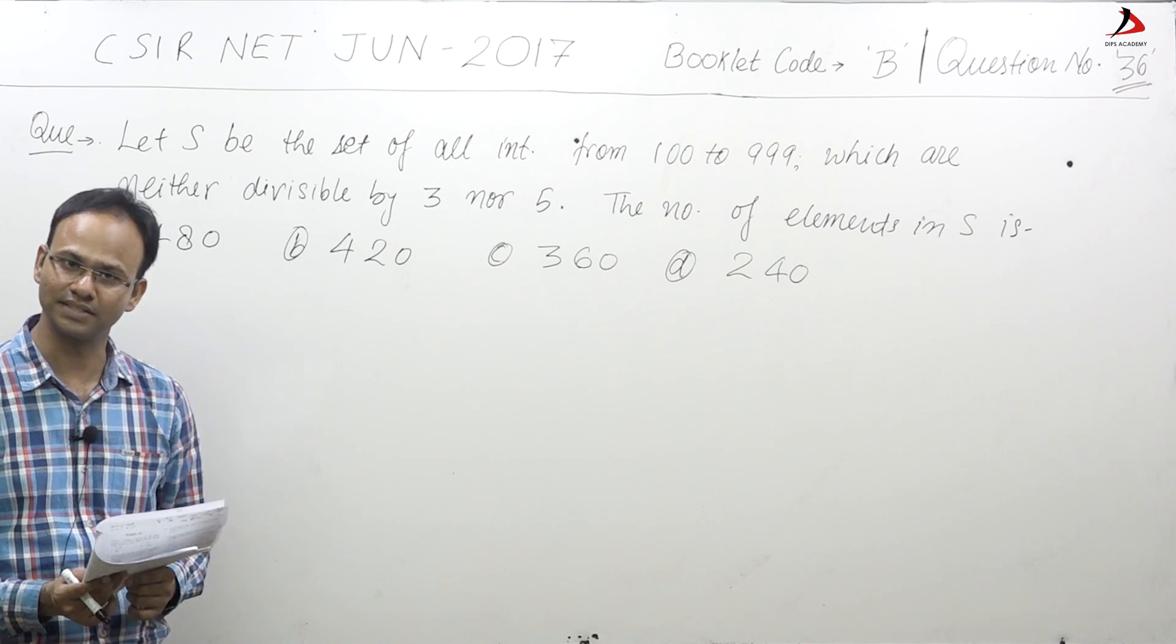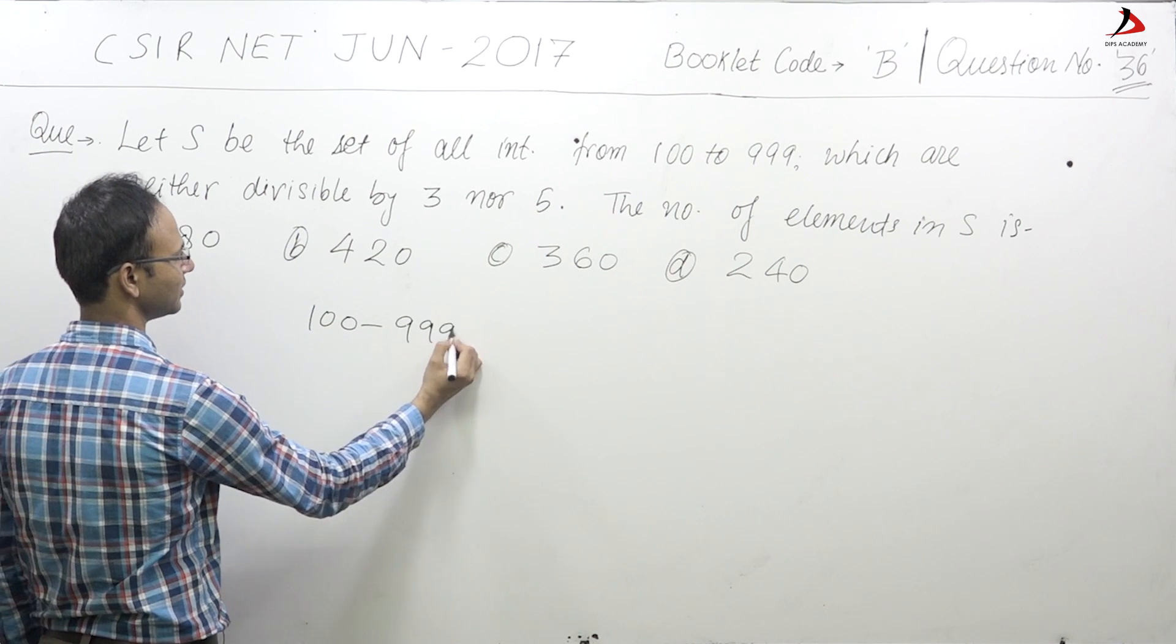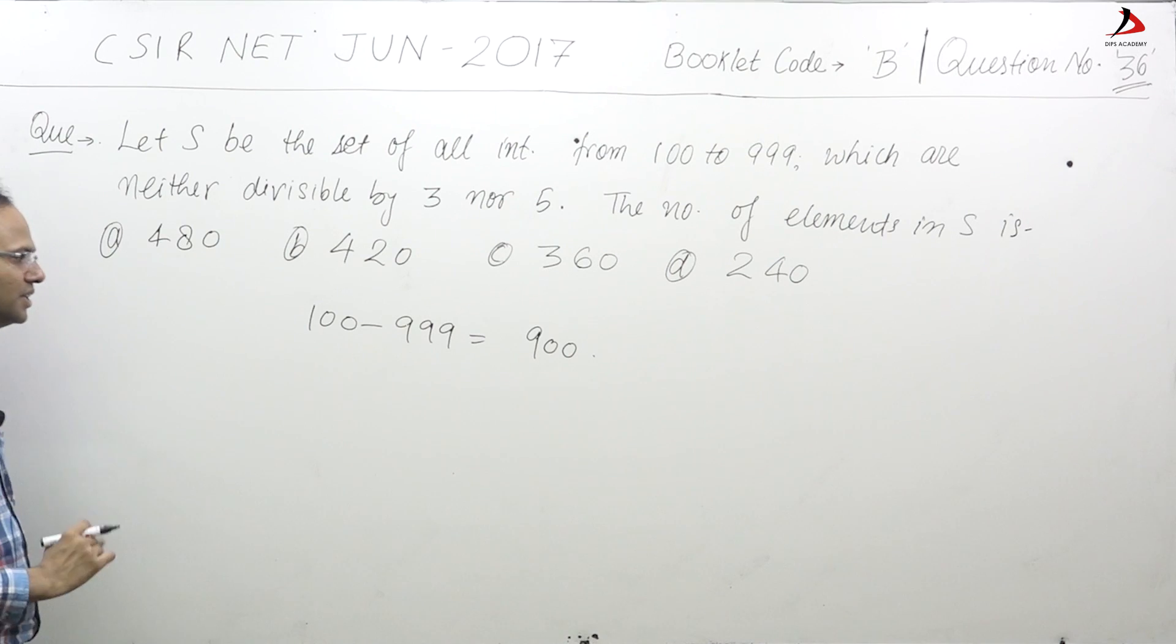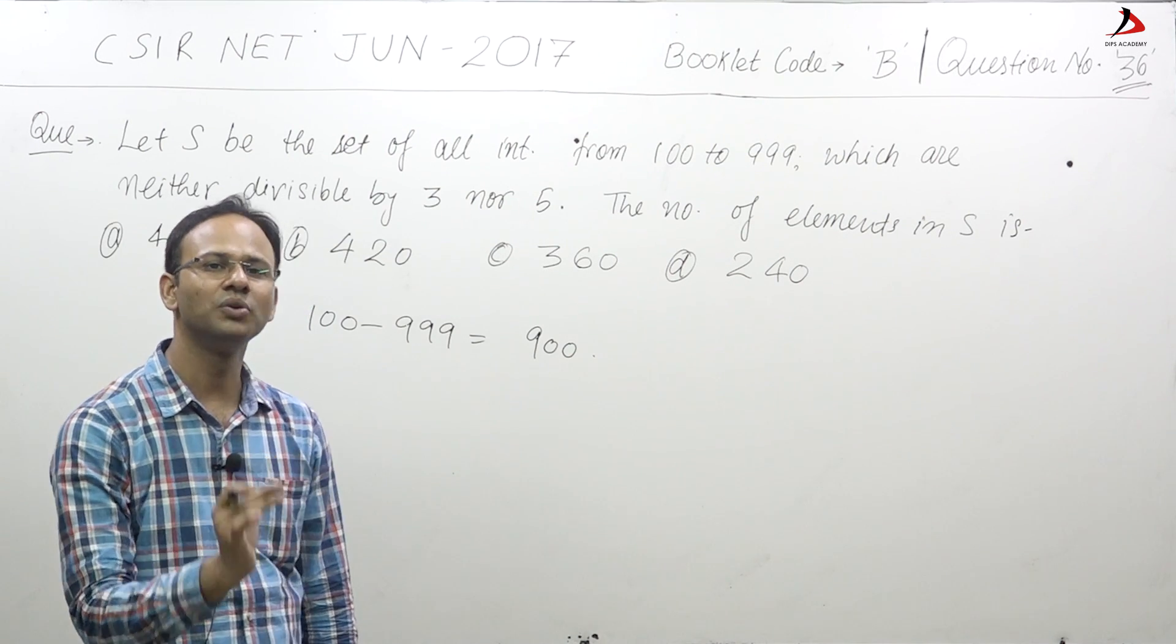From 100 to 999, there are total 900 numbers. The question says the numbers which are neither divisible by 3 nor by 5.